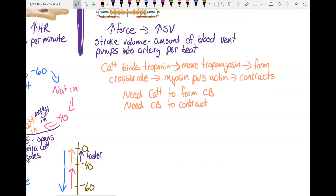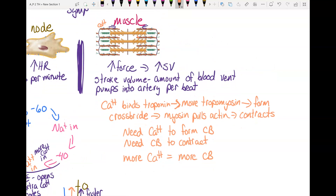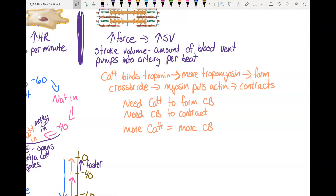The more calcium you have, the more cross bridges you can form. Think of playing tug of war — each cross bridge is a person grabbing the rope. Cross bridges are connections between the myosin and actin. The more connections you make, the more force it can pull. If you have more people on your tug of war team, more hands grabbing that rope, more people pulling — you're going to have more force. So more cross bridges means more force.